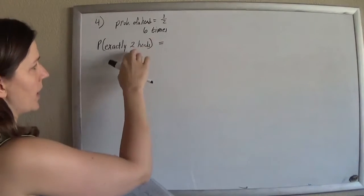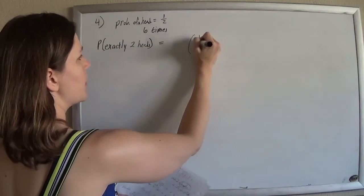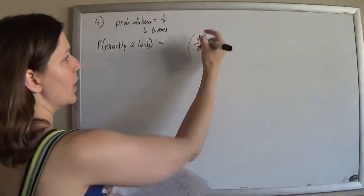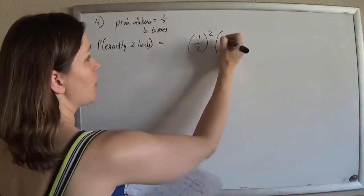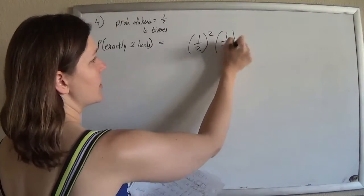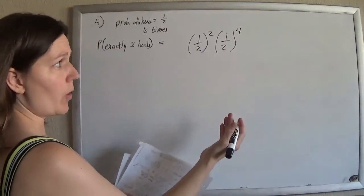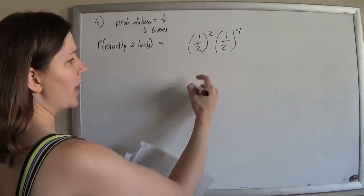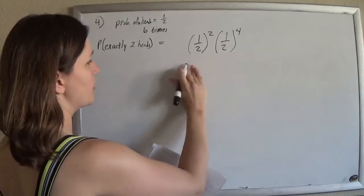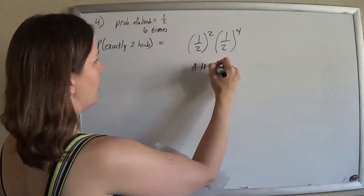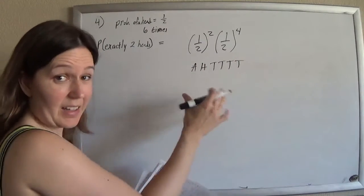I want to get exactly two heads. The probability of getting a head is one out of two, and I want two of those. The probability of not getting a head is one half — they have to add to one — and I want four of those. But this would just be the probability of getting head, head, tail, tail, tail, tail in exactly that order.